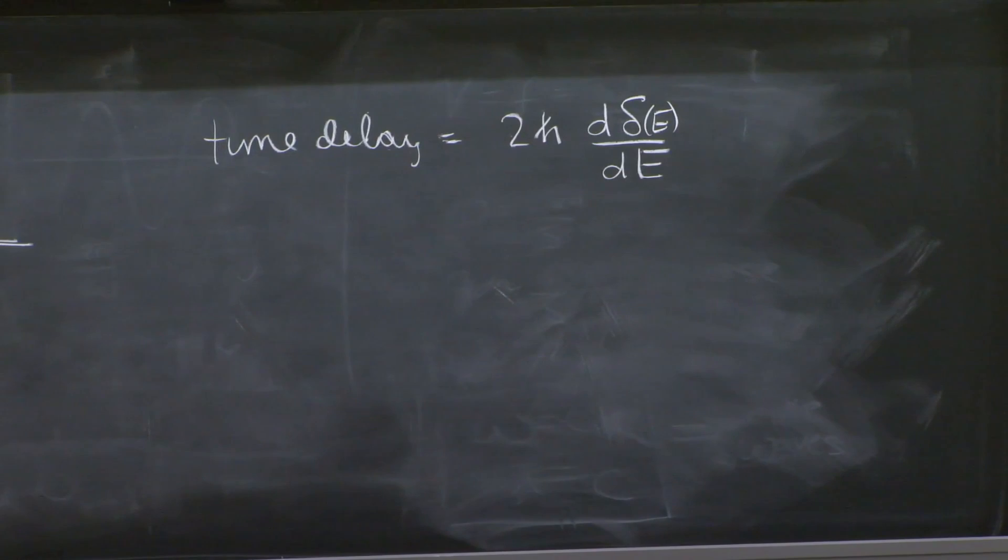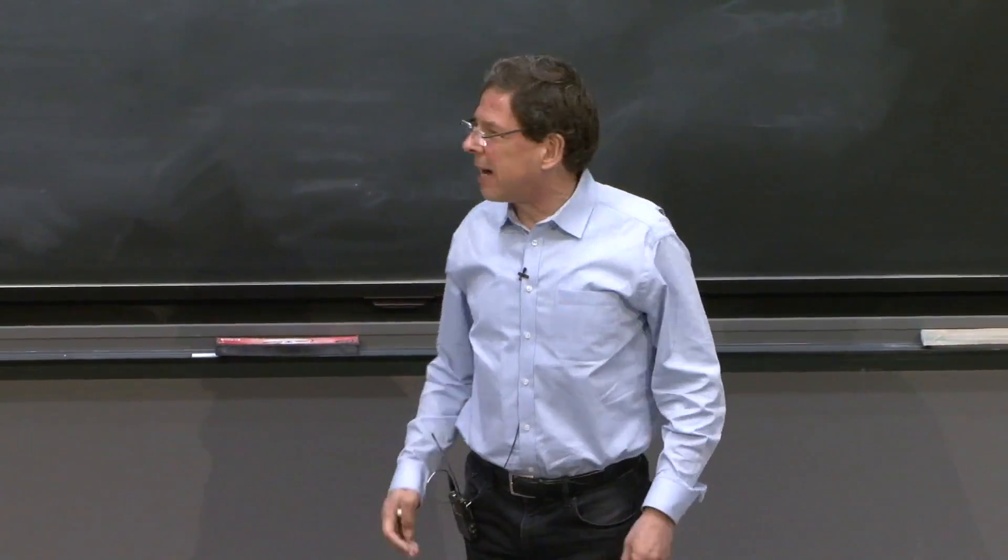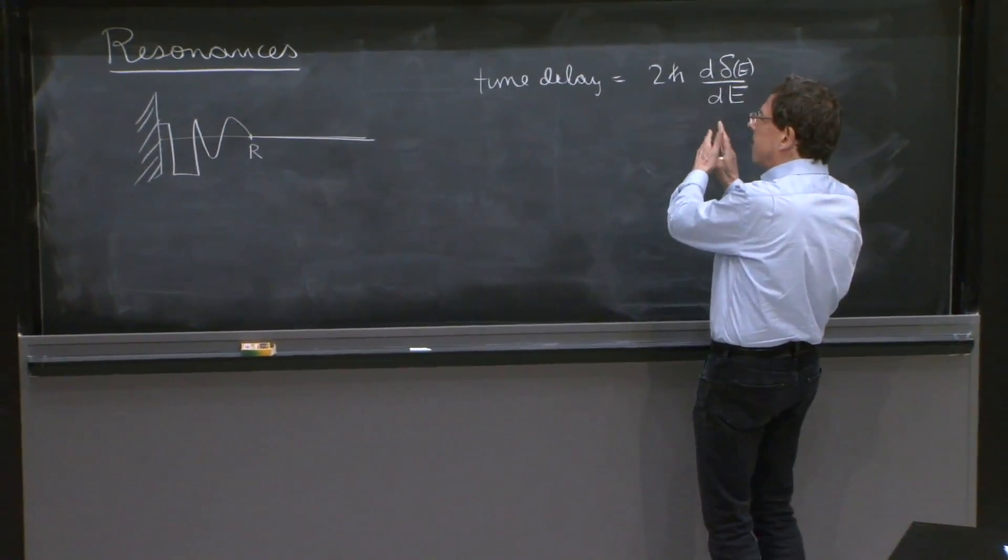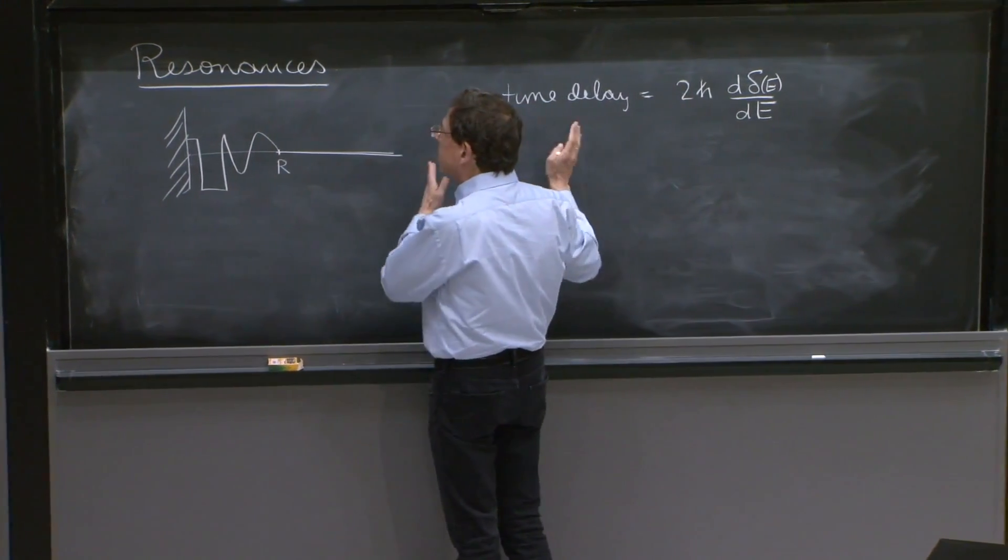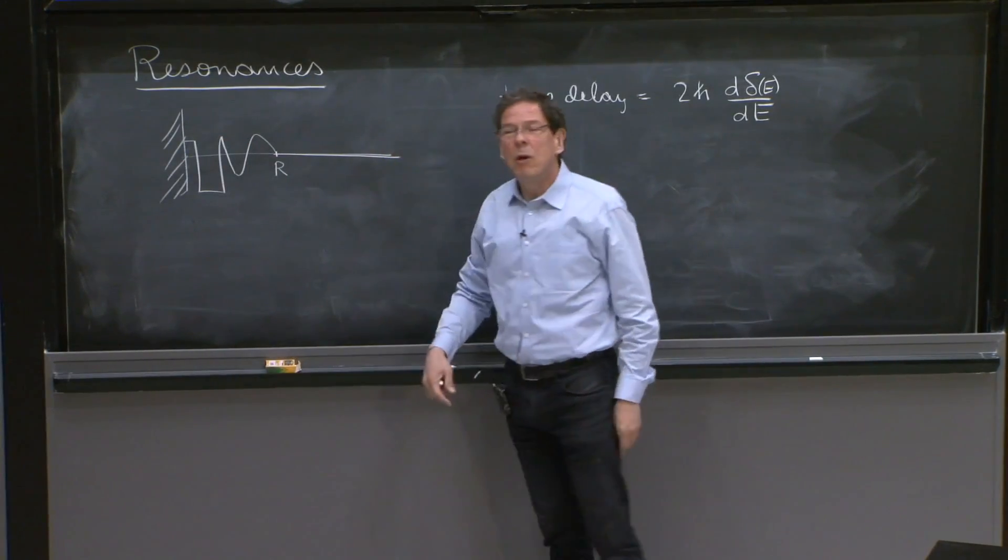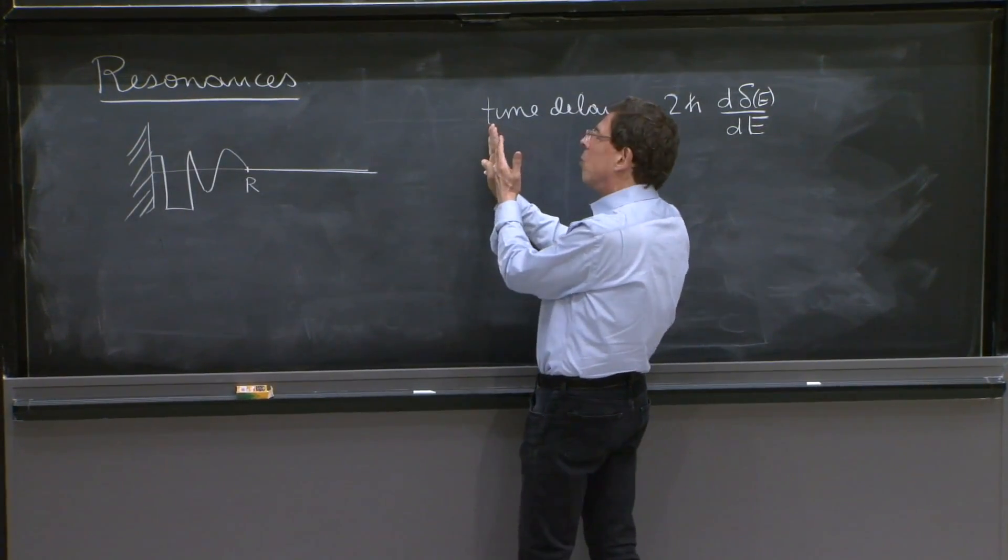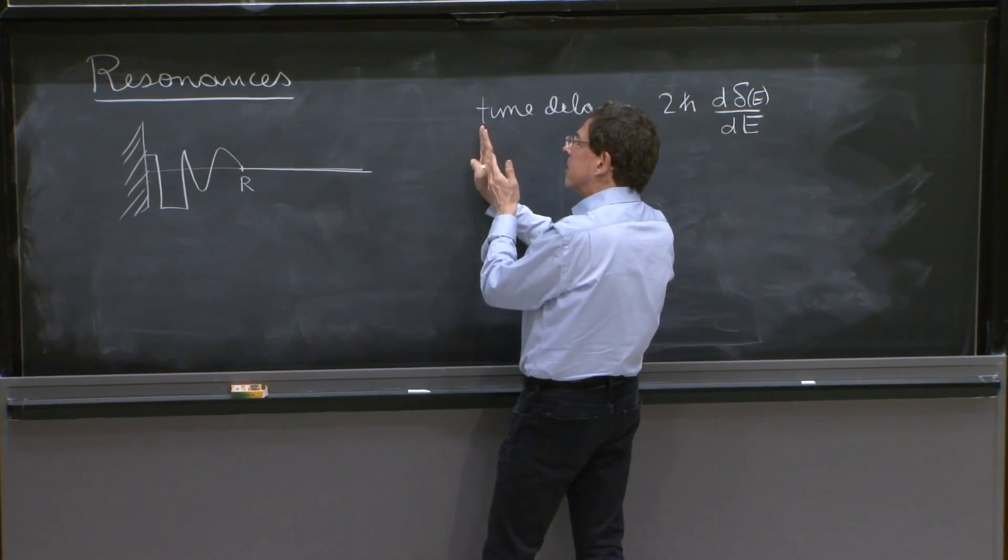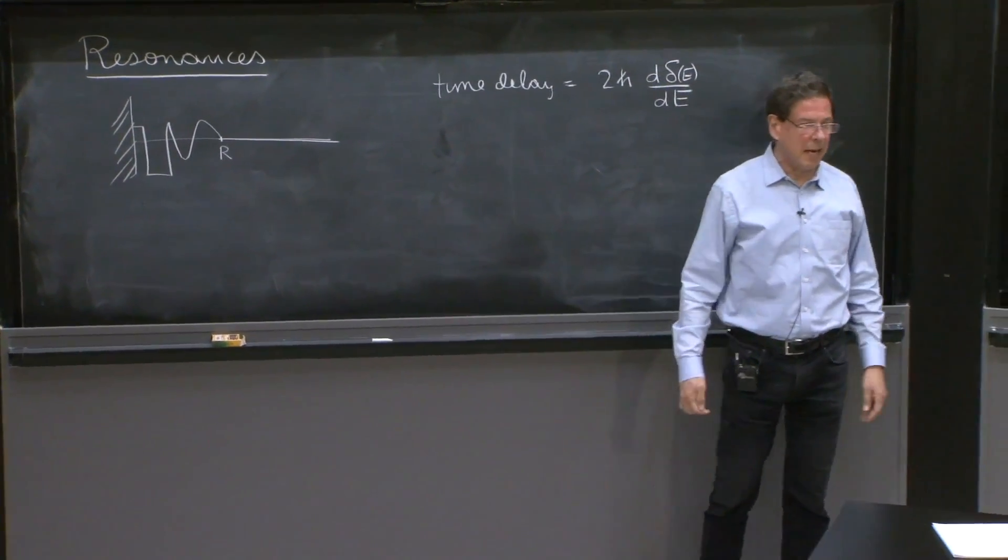And we discussed that this time delay can be positive or it can be negative. If it's positive, it really means a time delay. You send in a wave packet, and it takes more time to come back than it would have taken if there had been no potential. The time delay—you'd have a packet coming in from time minus infinity, and then it bounces back at time equal infinity. But nevertheless, you compare that with a situation in which there's no potential, and you see that there is some time delay. There is a positive time delay.